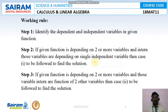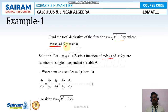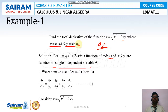This is the working rule. We will directly move to the problem. Find the total derivative of the function z = √(x² + 2xy), where x = cosθ and y = sinθ. Let z = √(x² + 2xy) be the function of x and y. Given the variables x = cosθ and y = sinθ, this is a single independent variable θ. Since we can't find dz/dθ directly, we use the chain rule and total derivative.